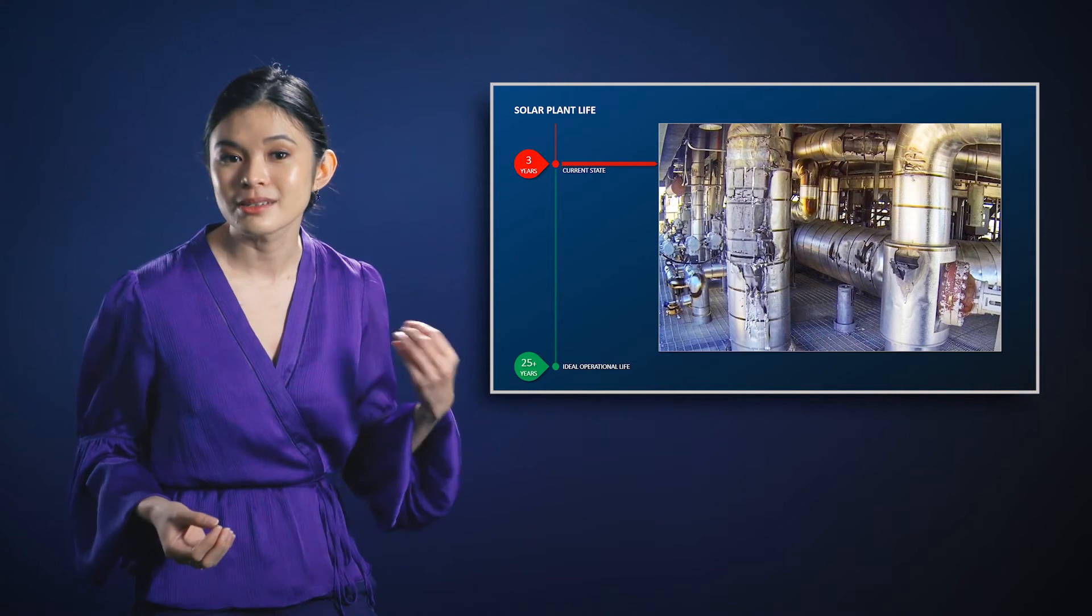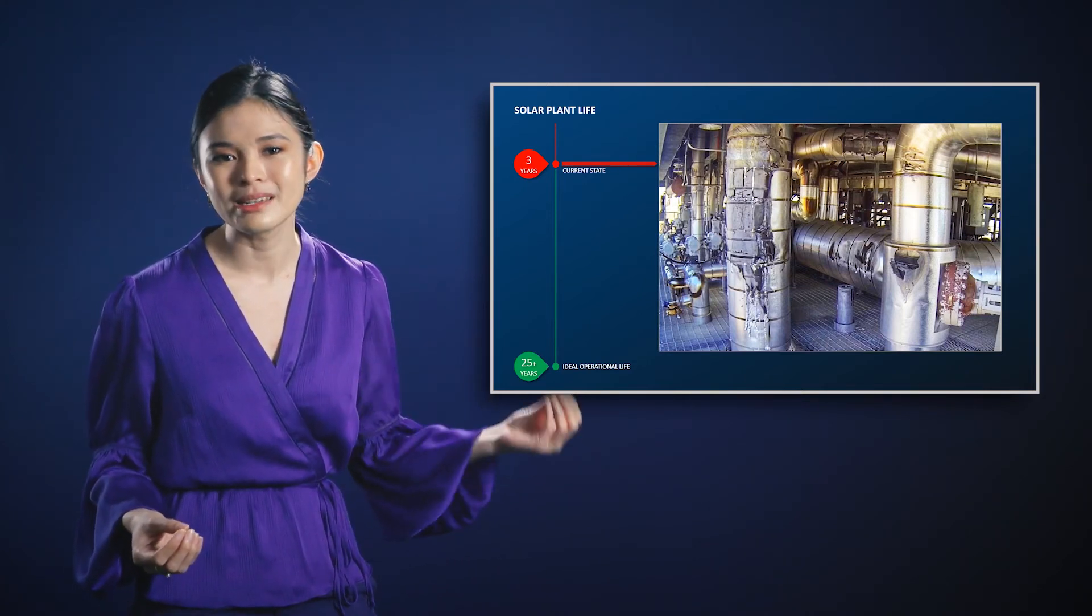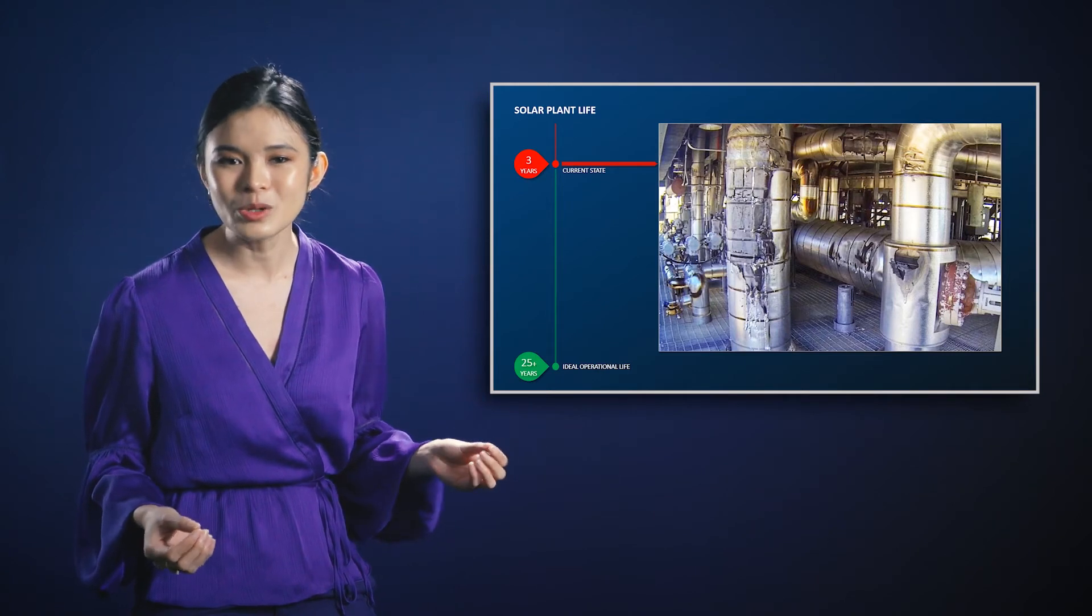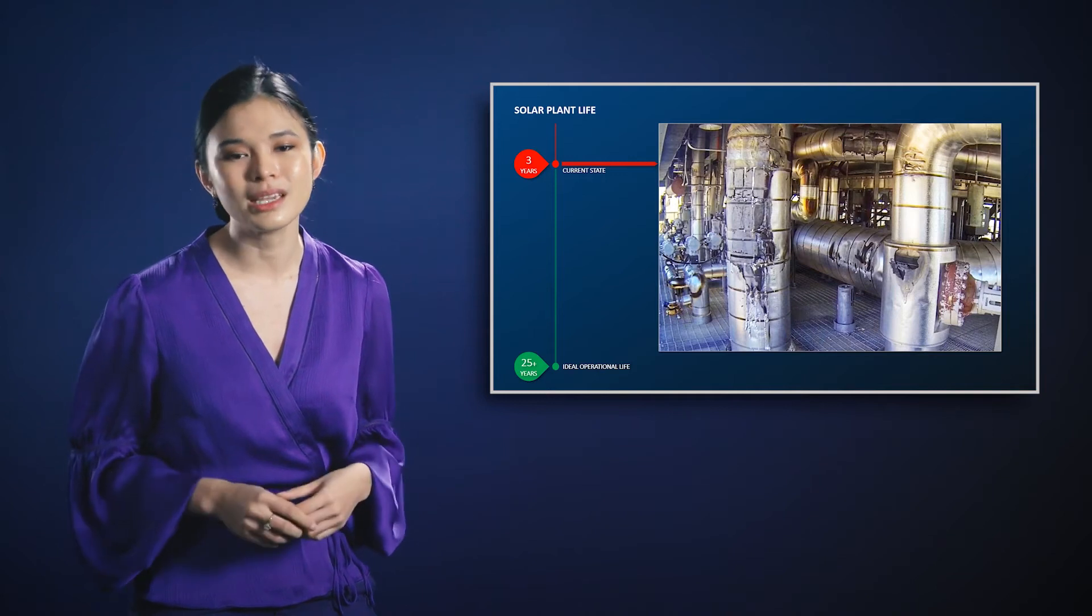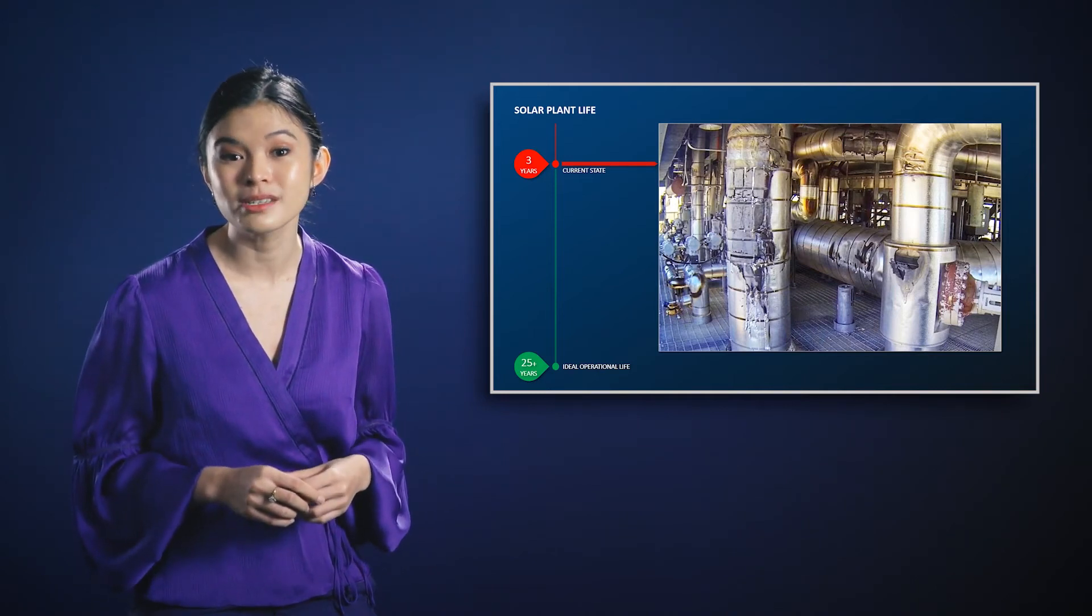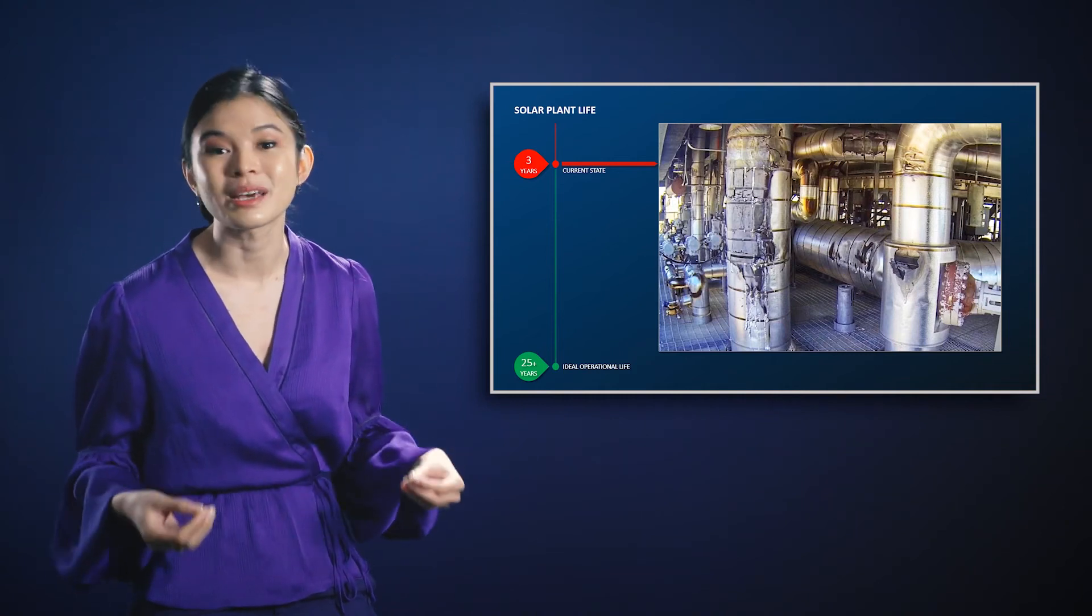a phenomenon known as corrosion fatigue. Now, fatigue is damage accumulated through repeated stress cycles, similar to when you bend a paper clip back and forth until it breaks. The exact same thing happens in our plants as the temperatures and stresses go up and down during the day as the sun goes up and down.